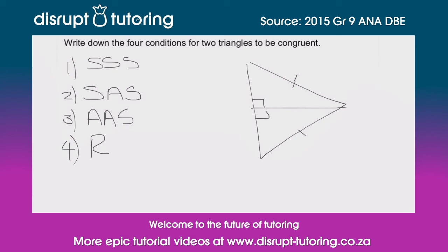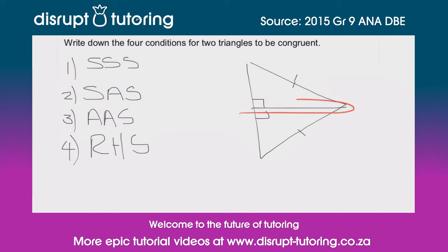The way we define congruency for this one is Right angle, Hypotenuse, Side (RHS). The way I typically remember this is 'right-hand side,' but it's all about the right angles being the same, the hypotenuses being the same, and then that extra side. And guys, those are the four conditions for two triangles to be congruent. Remember to memorize these so that when asked a congruency question, you're able to state the reason and identify what makes the two triangles congruent.